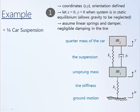In terms of assumptions, we'll assume linear springs and dampers and negligible damping in the tire. The next step in the procedure is to draw the free body diagrams — one for each independent inertia. Starting with M2: since X and Y equal zero in static equilibrium, we do not include the weight force. The only two forces applied to M2 are the force from spring K2 and the damper.